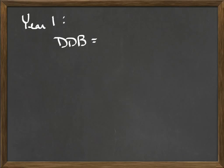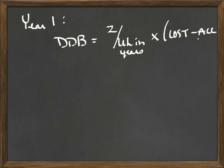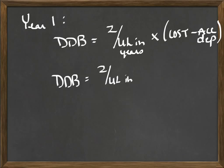In order to calculate double declining balance, first we need to know the formula. For double declining, you take 2 divided by useful life in years. Double means 2 times, so 200% would be your value — 100% would be 1, so double declining means 200%, giving us 2 over useful life in years. Then we multiply that by the cost minus the accumulated depreciation, which is another way of saying 2 over useful life in years times book value, because cost minus accumulated depreciation is your book value.